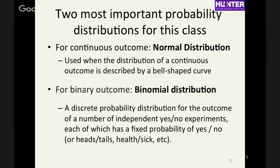The binomial distribution describes a so-called Bernoulli trial — something where you have a number of independent events each with the same probability. The classic example of such a Bernoulli trial described by a binomial distribution is a coin flipped a certain number of times.